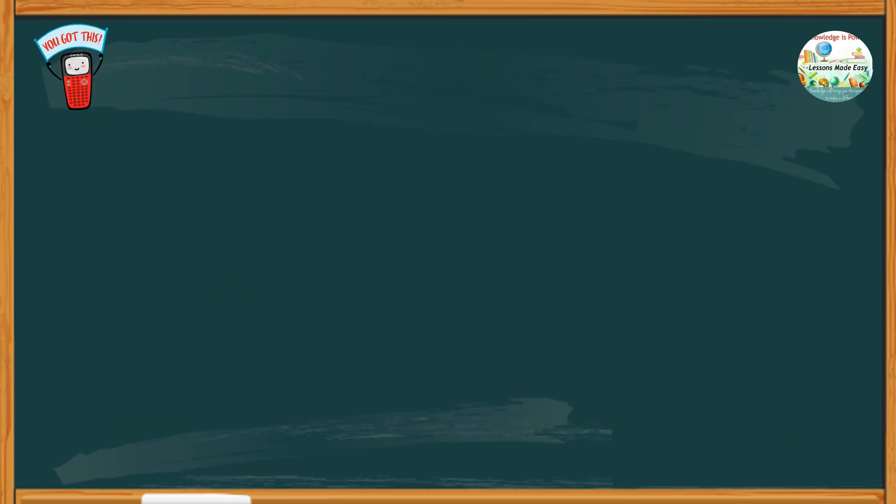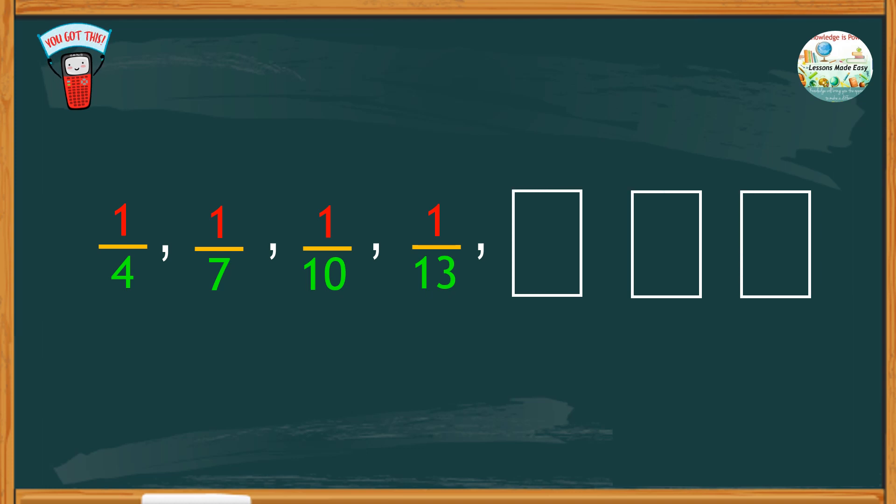Let's try the last one. Study the given unit fraction. What would be the next 3 numbers in the sequence? I bet you would say 1 over 16, 1 over 19, and 1 over 22.